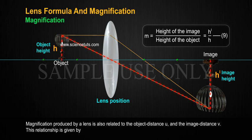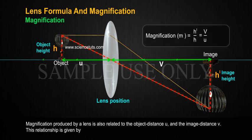Magnification produced by a lens is also related to the object distance U and the image distance V. This relationship is given by magnification M equals to H' by H equals to V by U. Equation 10.